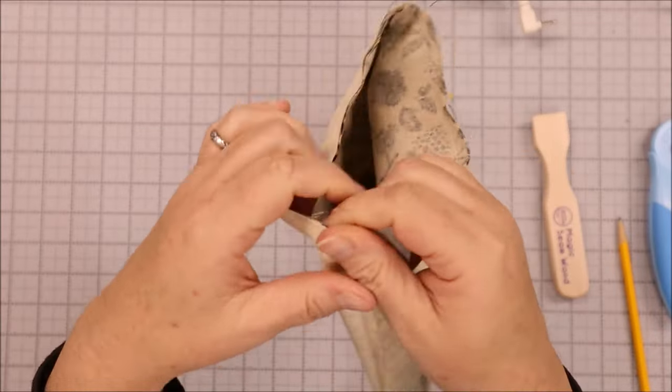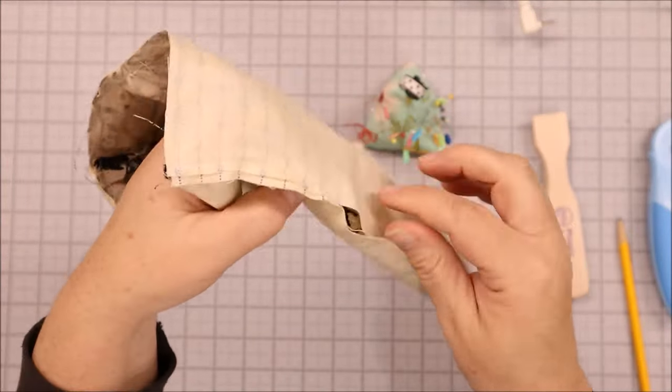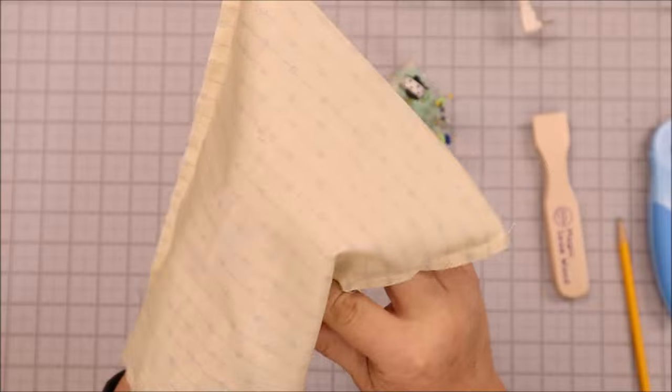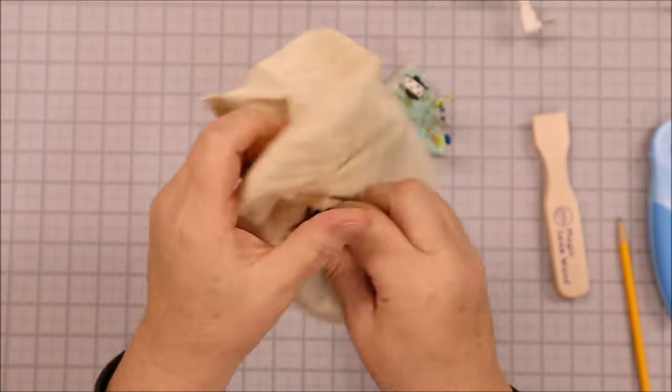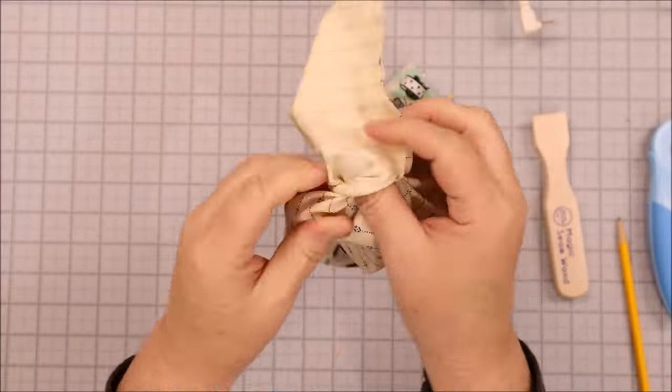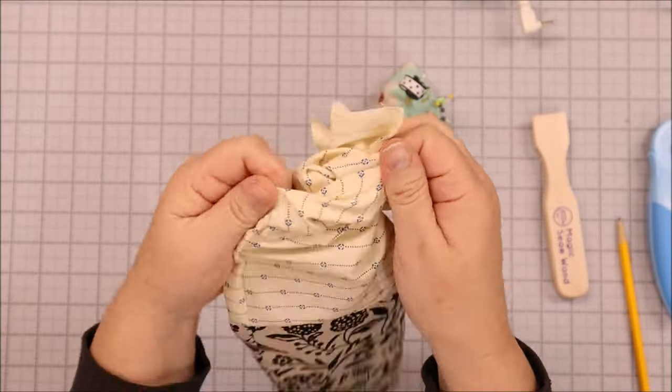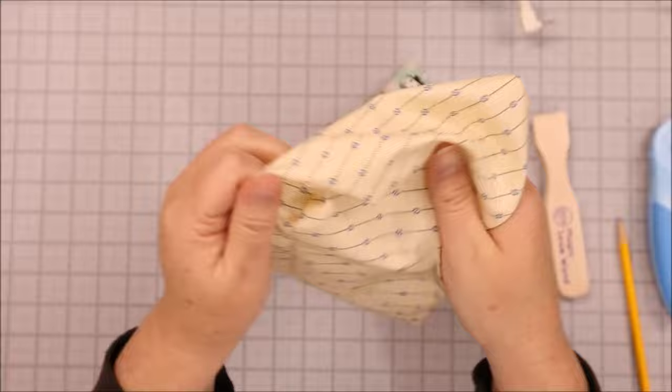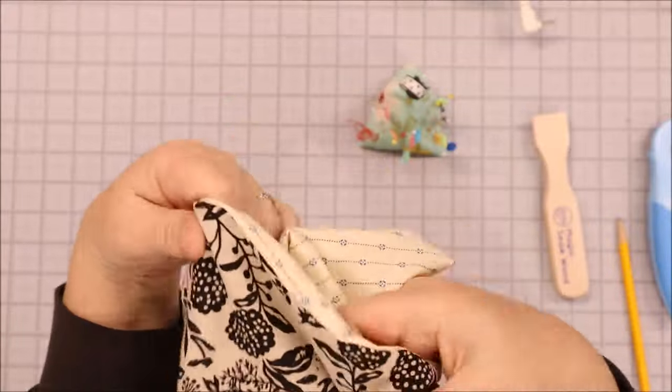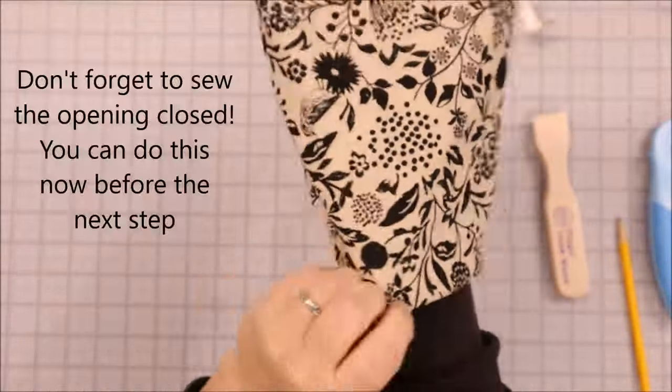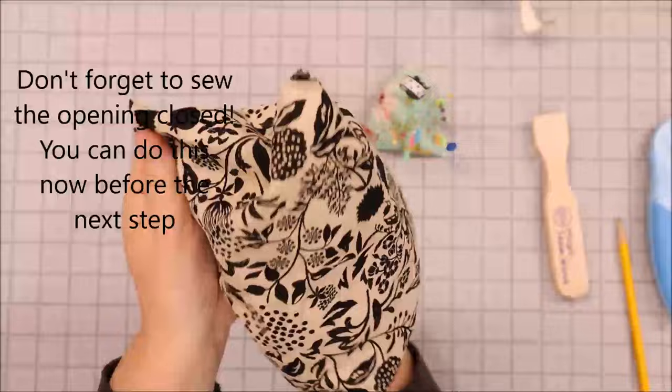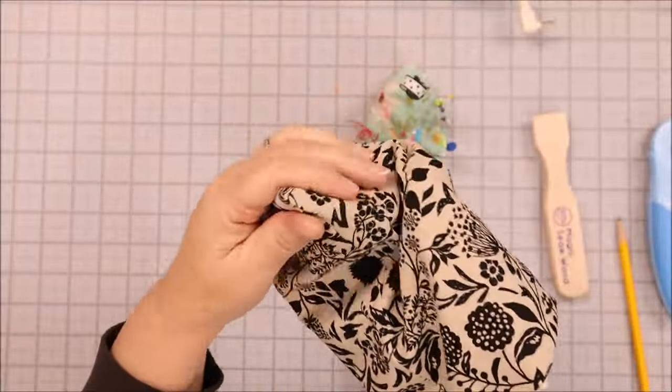All right, now I have that top edge all sewn and I can reach inside my little opening that I have in the lining and I'm going to grab the outside fabric and start pulling it through. Once that's through, I'm going to start pushing right sides out the lining as well. And now I can open up my bag. So I'm just going to pinch it and open it up and I am going to shove my hand in here and push down, push the lining into the corners of the outside piece.